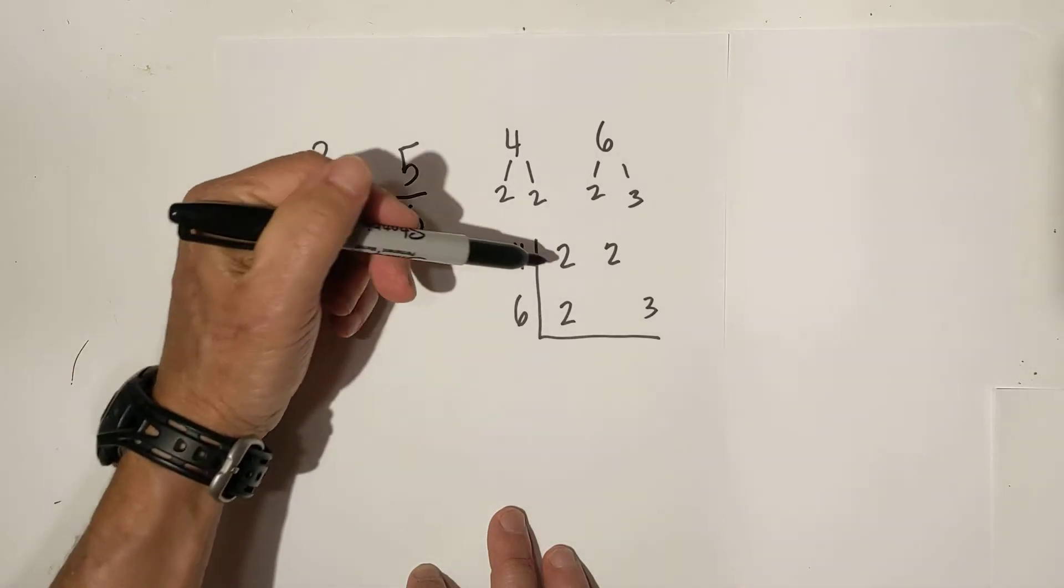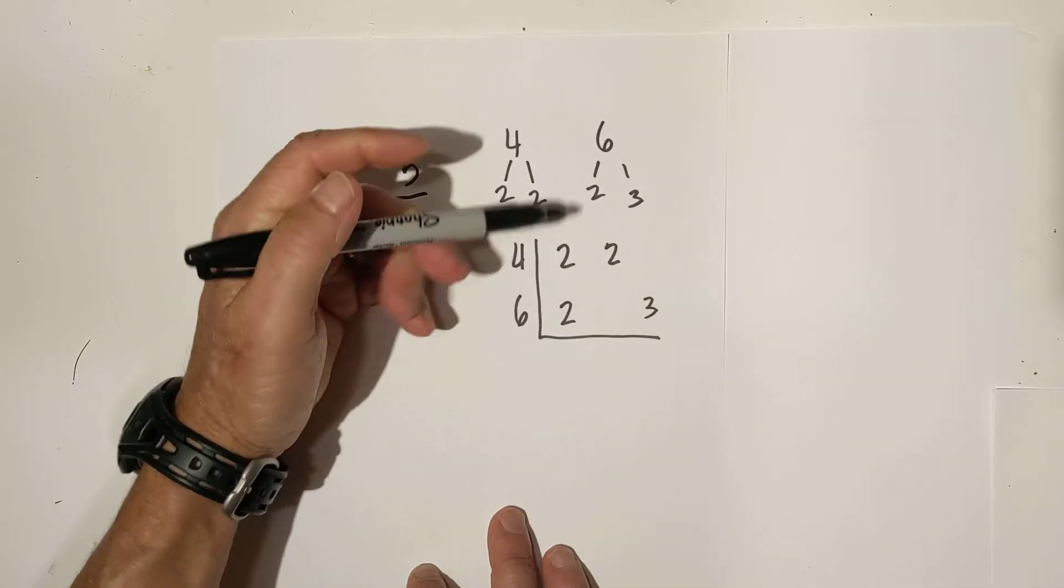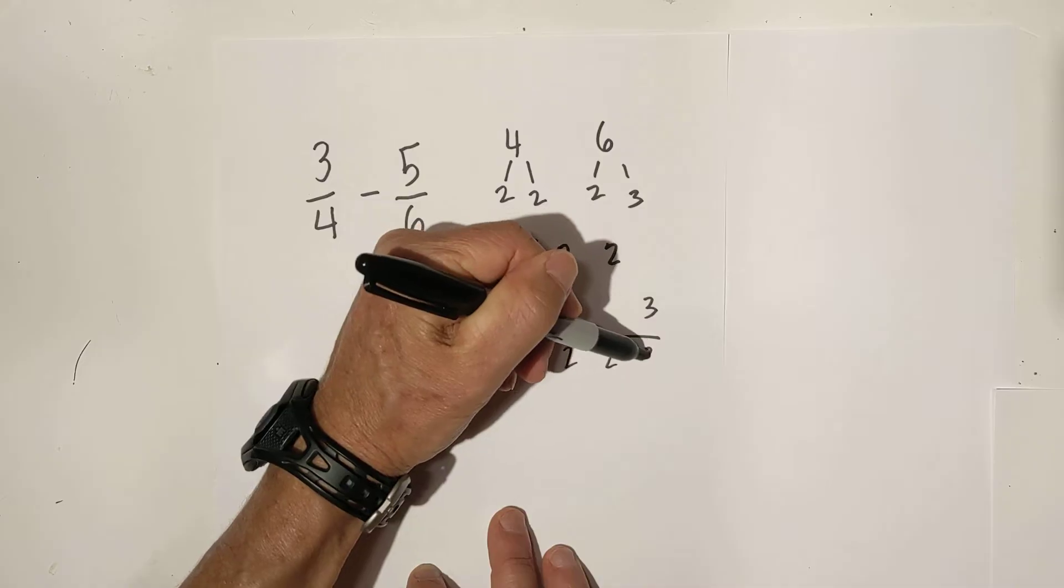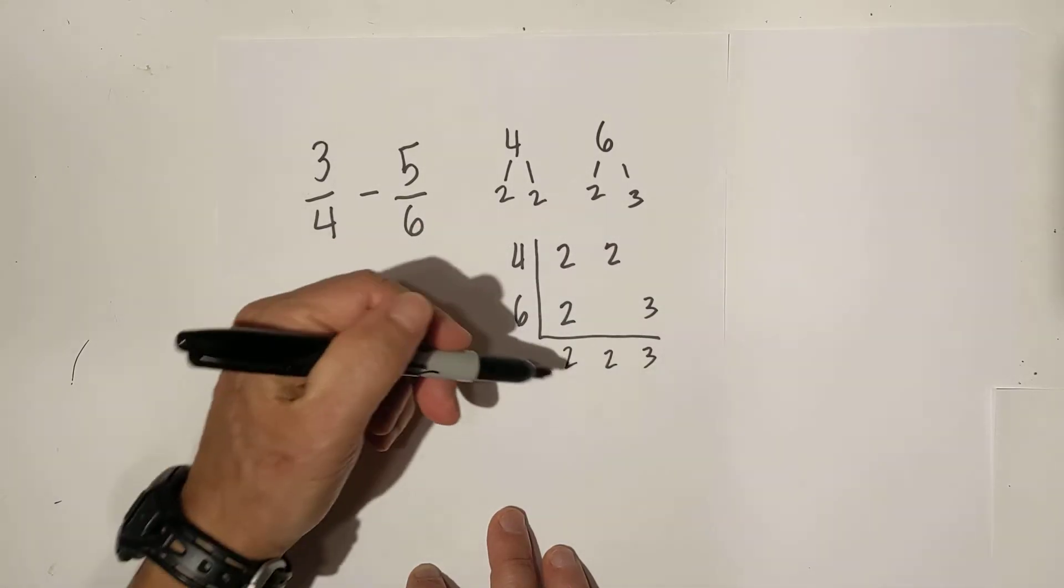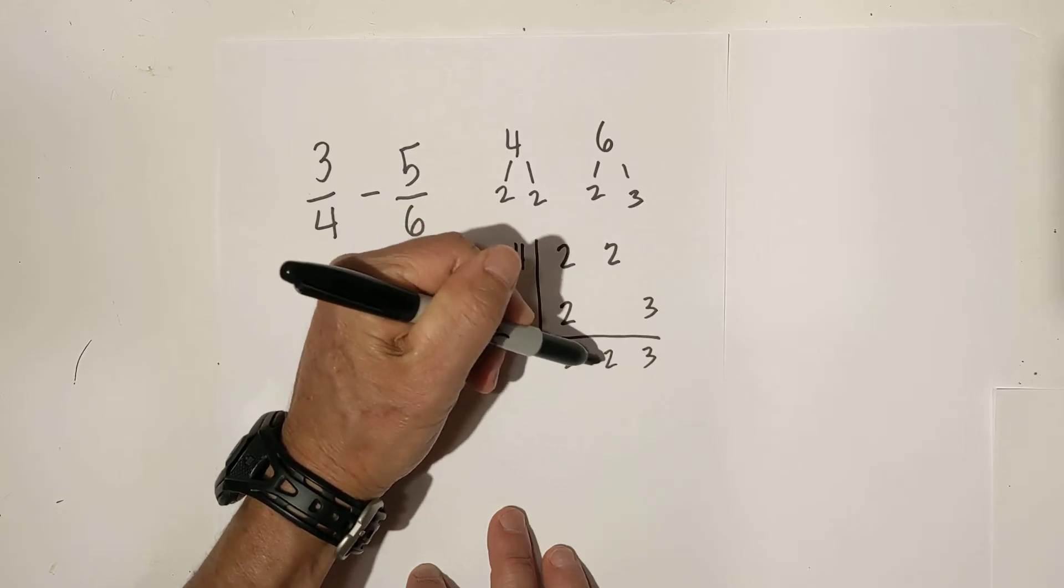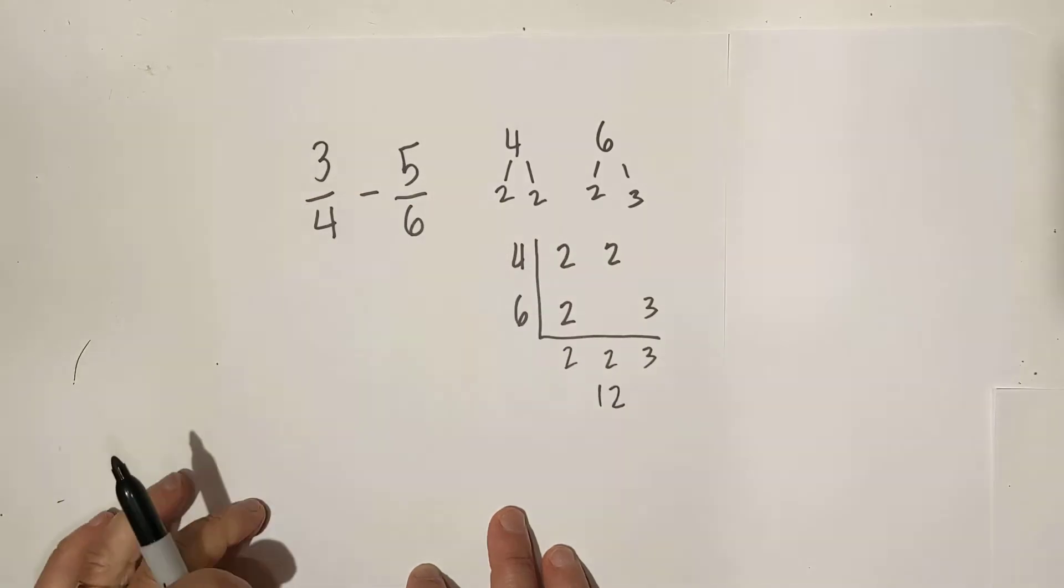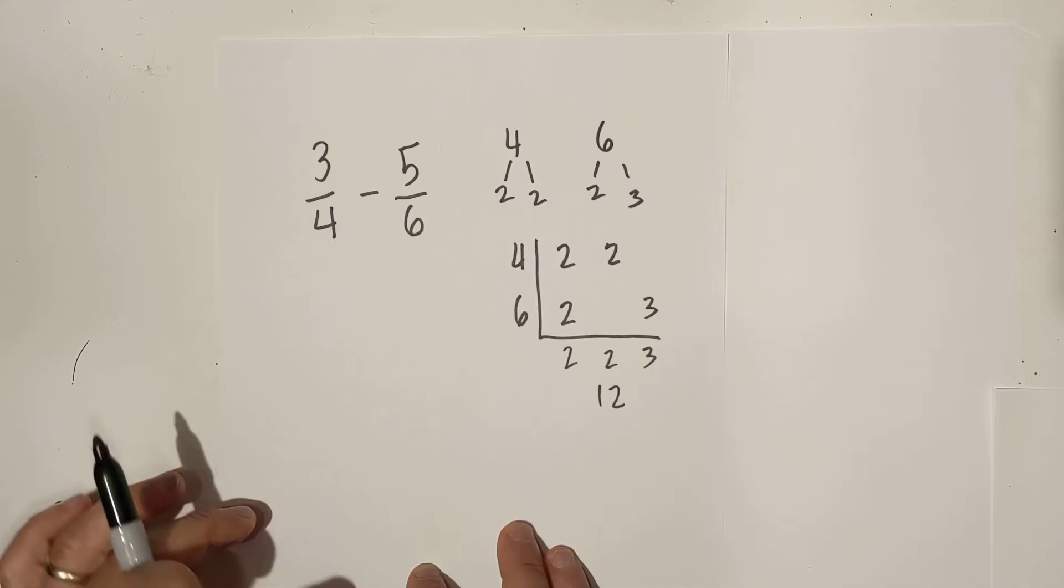and then the rule is if you have more than one in a column, just bring down one number, and then you just multiply everything together. It always works for common denominators. I just find it easy. Two times two is four. Four times three is twelve. So now I have a common denominator of twelve.